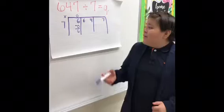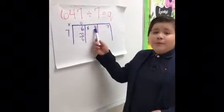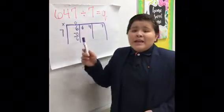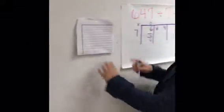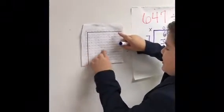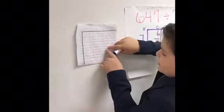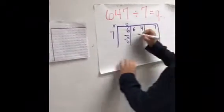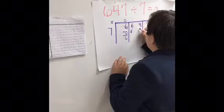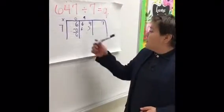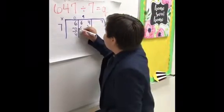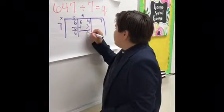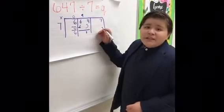We ask ourselves how many groups of 7 can we make with 64. In this case, it is 63. 7 times 9 is 63. We will subtract the 63 from the 64.